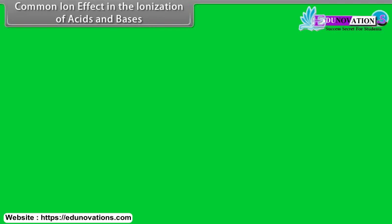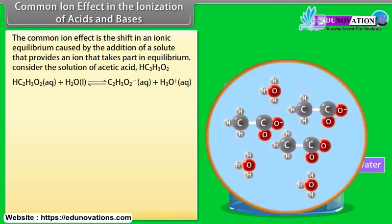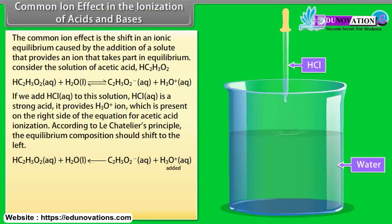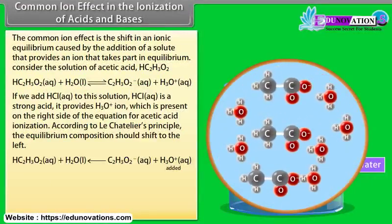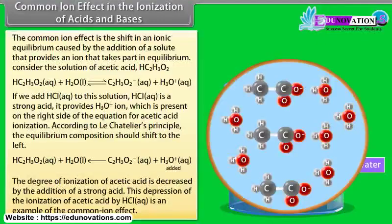Common ion effect in the ionization of acids and bases. The common ion effect is the shift in an ionic equilibrium caused by the addition of a solute that provides an ion that takes part in the equilibrium. For example, if HCl is added to acetic acid solution, HCl provides H3O+ ions, which are on the right side of the acetic acid ionization equation. According to Le Chatelier's principle, the equilibrium shifts to the left, decreasing the degree of ionization of acetic acid. This is the common ion effect.